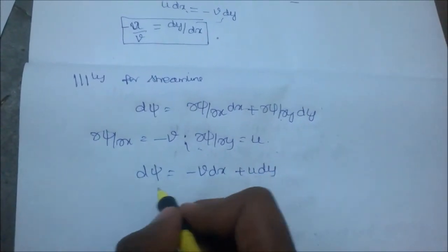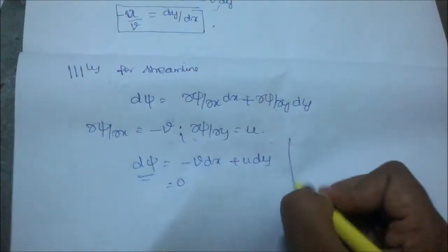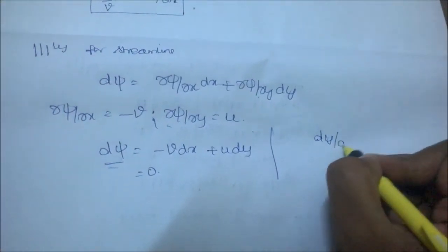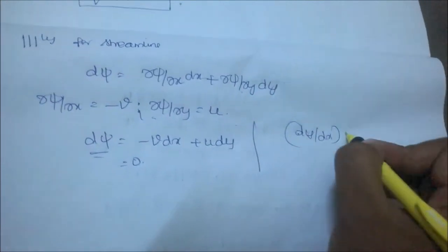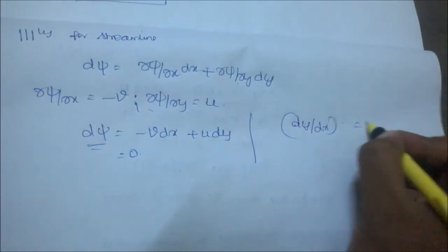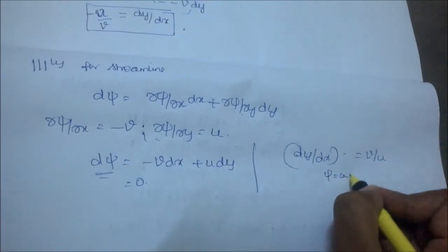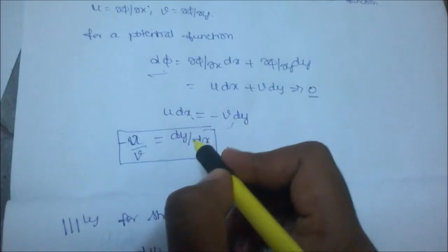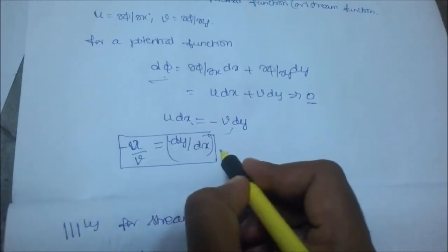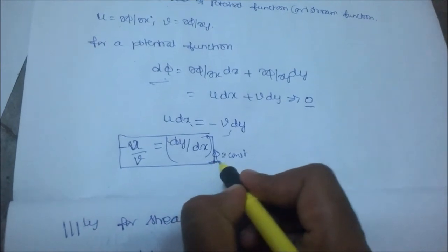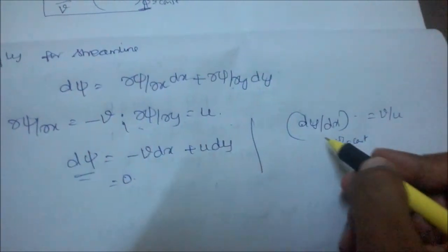This term equals minus v dx. Then you can write dy/dx equals v/u, assuming ψ equals a constant. And assuming here φ equals constant. Now φ is the velocity potential and ψ is the stream function.